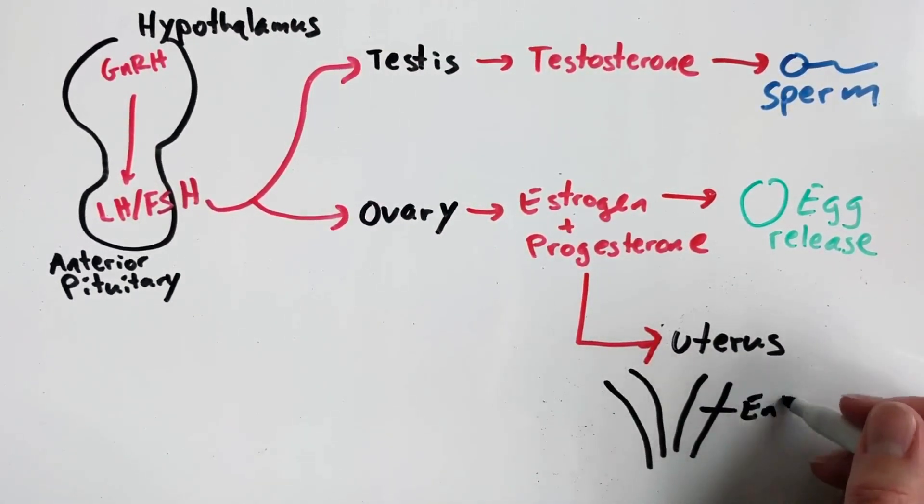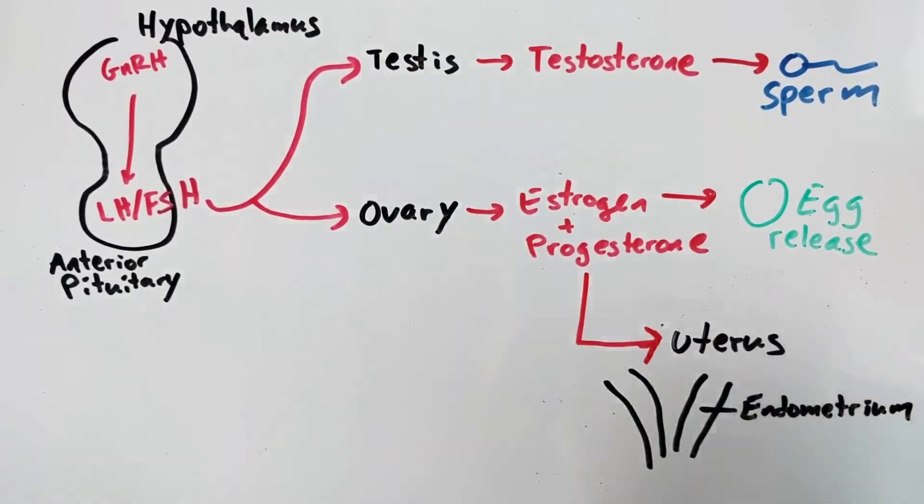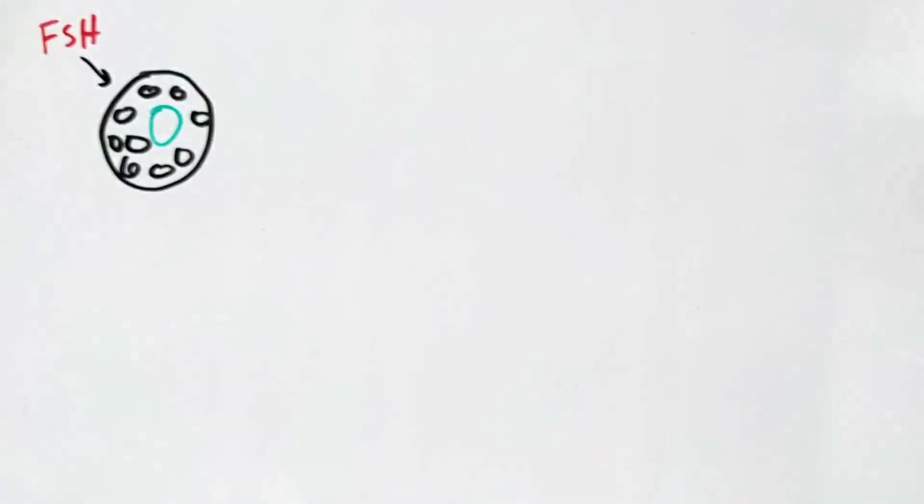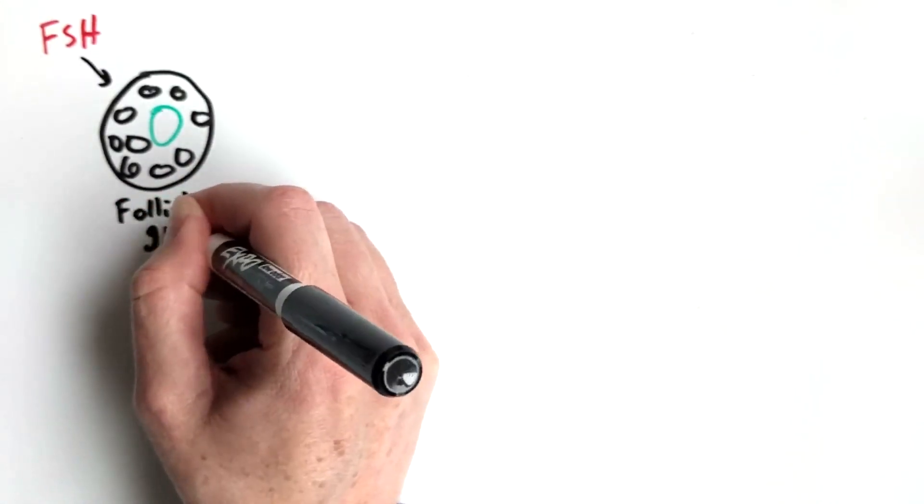This monthly sequence of events is known as the menstrual cycle. Let's look at the key events. At the start of each cycle, FSH signals one follicle in the ovary to grow. Inside the follicle is the immature egg.